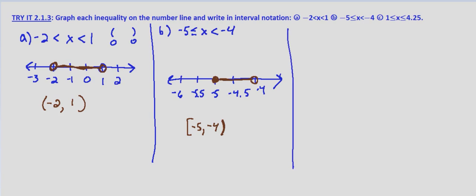And last but not least, with part C, we're given 1 is less than or equal to x, which is less than or equal to 4.25. Now these are a little bit further apart, so because we have the 0.25, I'm still going to use increments of one fourth, or 0.25.